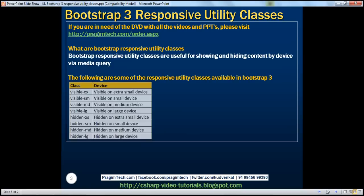Here we've got some of the responsive utility classes available in Bootstrap 3. Notice there is a class 'visible-xs' — xs stands for extra small. If we apply this class on an element, that element will be visible only on an extra small screen size. We also have 'visible-sm', sm for small. If we apply this class on an element then that element will be visible only on a small screen size. If we apply both these classes on an element then that element will be visible on both extra small and small screen sizes, but not on medium and large.